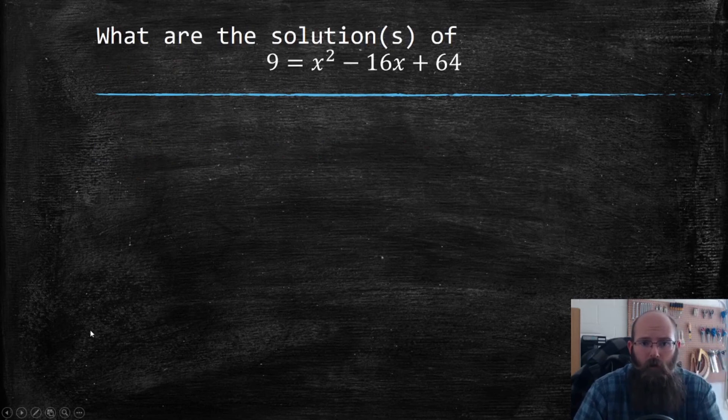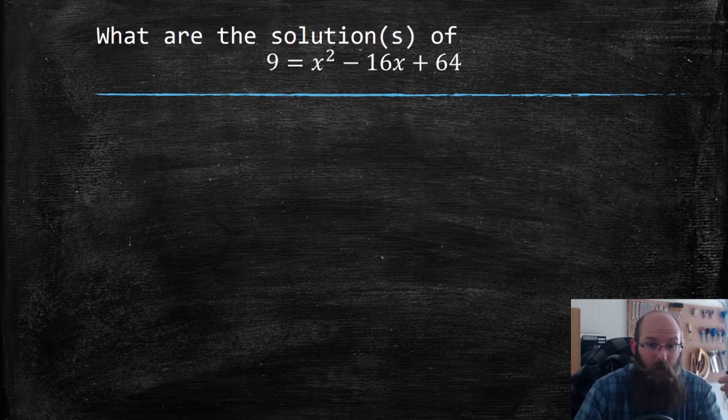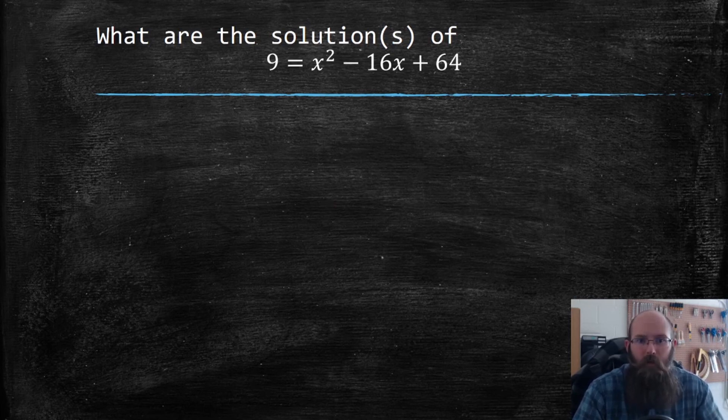So we're right here. What are the solutions of 9 = x² - 16x + 64? There's a couple of ways I can do this. I can start off by subtracting that nine over and then trying to factor it or completing the square.